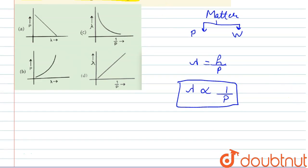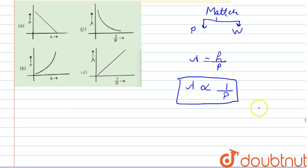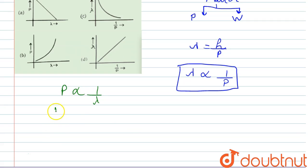Now in option number one, we are given the graph between p, that is momentum, and lambda. We know that p is inversely proportional to lambda from this equation. This means this is the inverse relation we will draw the graph.